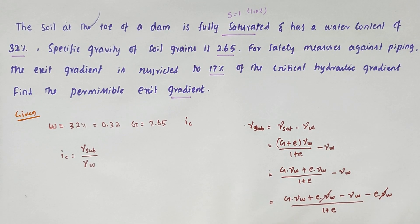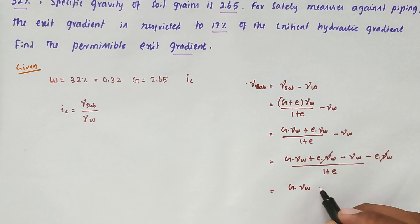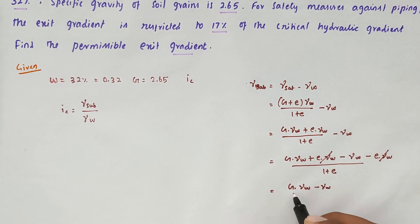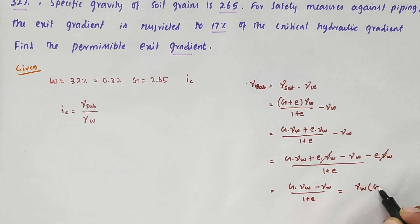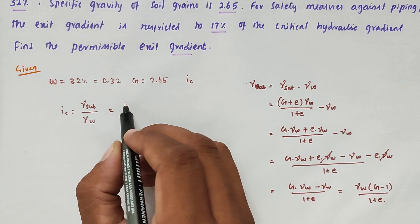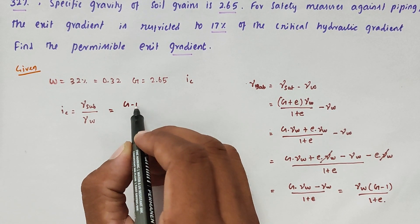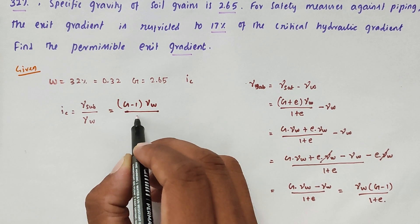The E·γ_w terms cancel, and we get G·γ_w minus γ_w divided by (1 + E). Factoring out γ_w gives γ_w · (G − 1) divided by (1 + E). So gamma submerged equals (G − 1)·γ_w divided by (1 + E), and the critical gradient IC equals (G − 1) divided by (1 + E).